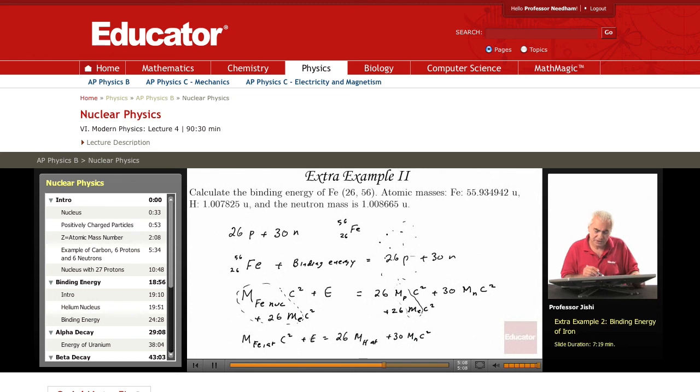So the binding energy, you just have to put the numbers. So what is the binding energy? So it's 26 Mh atom plus 30 Mn minus M Fe atom C squared equals.